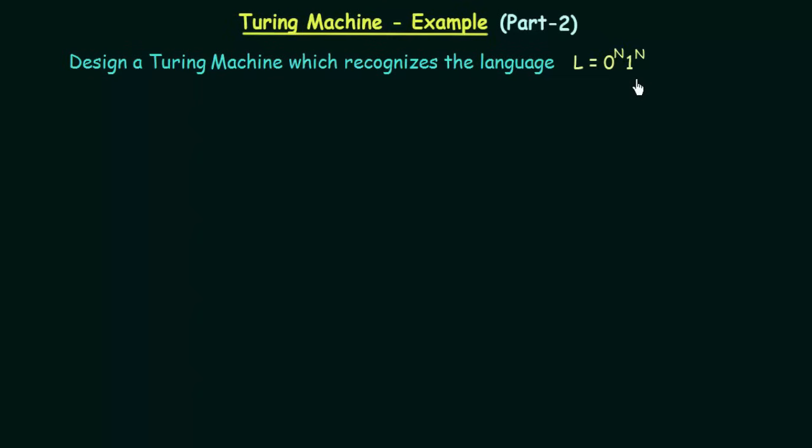If you remember, we talked about this example in our previous lectures when we discussed finite state machines, and we saw that we could not design this using finite state machines. Because we need to keep a count of how many zeros there are in order to repeat the exact same number of ones. Finite state machines, due to their limited memory and limited capability, cannot handle this language, and hence this is not a regular language.